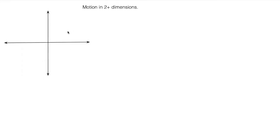Moving on to chapter three, we're now on to motion in two or more dimensions. Mostly we're going to be looking at motion in the plane, as opposed to motion on a line. Now we're going to look at motion in the plane. You could look at motion in three dimensions or even more, but typically we break our motion down into a plane — that's the XY plane.